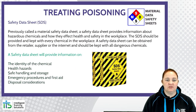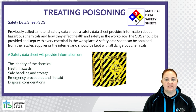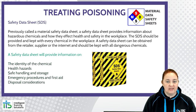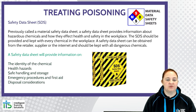A safety data sheet — previously called a material safety data sheet — provides information about hazardous chemicals and how they affect health and safety in the workplace. The SDS should be provided and kept with every chemical in the workplace and can be obtained from the retailer, supplier or the internet. A safety data sheet will identify the chemical, health hazards, safe handling and storage, emergency procedures, first aid and disposal considerations.